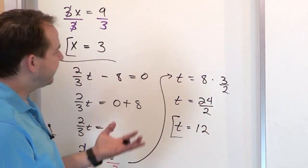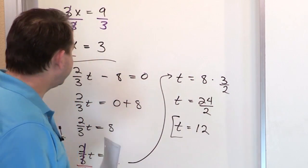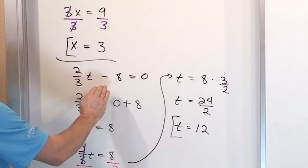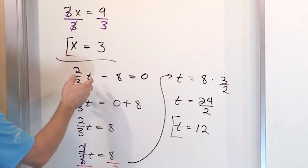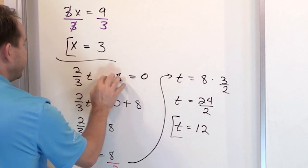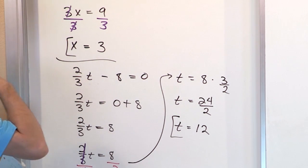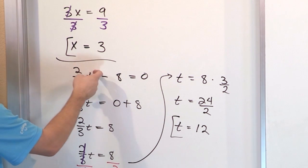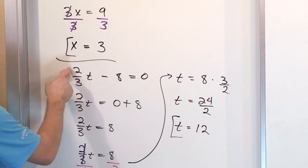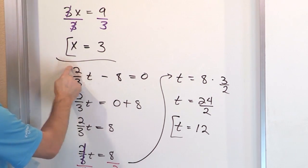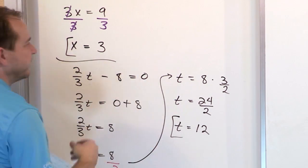To verify, substitute t equals 12 back in: two-thirds times 12 equals 24 over 3, which is 8. Then 8 minus 8 gives you 0, which matches the right-hand side. The nice thing about algebra is you can almost always check your work to know if you're correct.